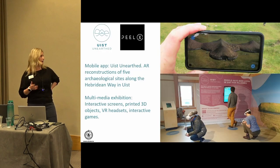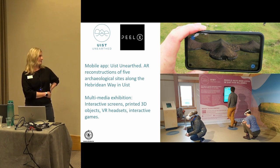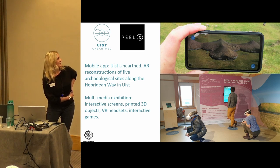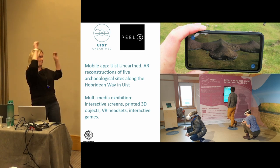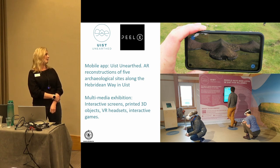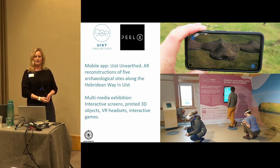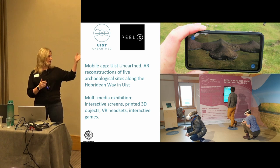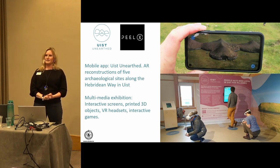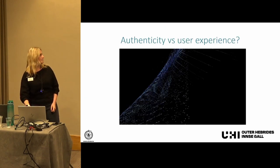With those challenges in mind, we created Uist Unearthed. There are two main outputs: first, the mobile app, which has augmented reality reconstructions of five archaeological sites along the Hebridean Way in Uist. You can trigger the app and bring up a life-size reconstruction of what it might have looked like in the past. And more recently, to support the AR app, we've got a traveling multimedia exhibition with virtual reality headsets, 3D printed artifacts, digital interactives and games. The project is led by archaeologists working with developers and modelers, Heel X.